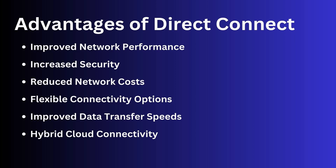Flexible connectivity options: Direct Connect offers several connectivity options to meet your needs, including dedicated connections, hosted connections, and virtual interfaces. Improved data transfer speeds: Direct Connect can provide faster data transfer speeds than internet-based connections, which is especially important for large data transfers and other high-bandwidth workloads. Hybrid cloud connectivity: Direct Connect can help facilitate hybrid cloud connectivity by enabling you to establish a private dedicated connection between your on-premises infrastructure and AWS.